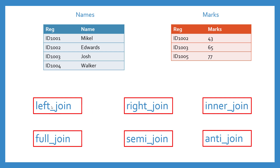We have left join, right join, inner join, full join, semi join, and anti join. Let's start with the left join.